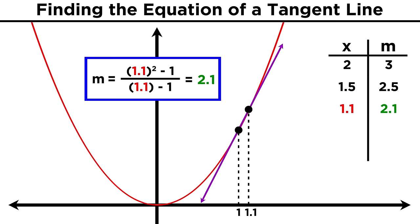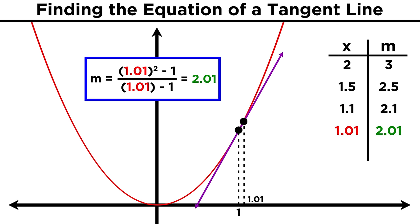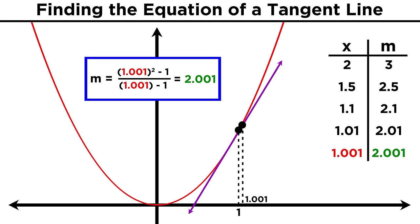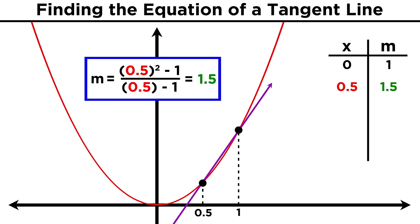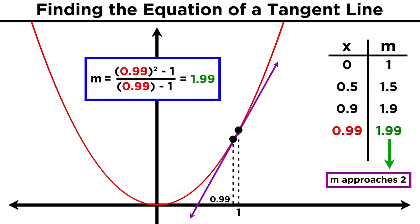Now let's keep pushing this second point closer and closer to our initial point. We can try x equals one point one, then one point zero one, then one point zero zero one. The resulting line gets closer and closer to being equivalent to the tangent line we are looking for, and its slope gets closer and closer to two. We can even do this from the other direction, starting with x equals zero, going up to x equals one half, zero point nine, zero point nine nine, and we see the same effect.